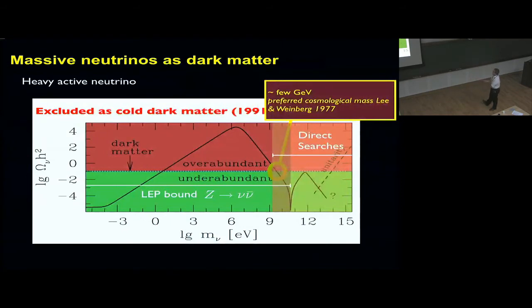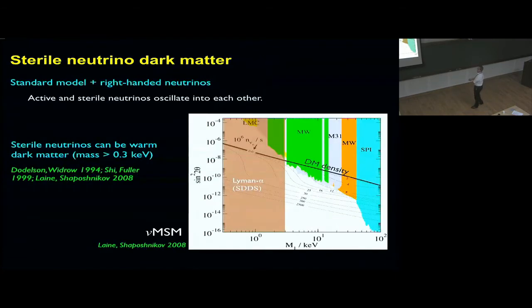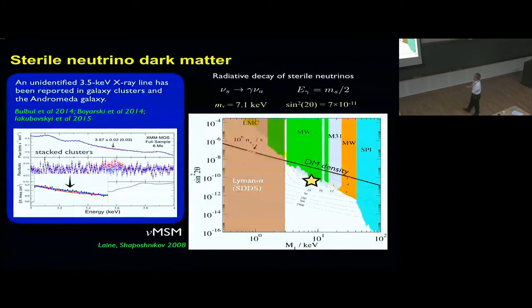Massive neutrinos were the first WIMP candidate back in 1977. There were some Russian papers before this too, but they were excluded in the early 90s by a combination of light data and direct searches. The sterile neutrinos as dark matter has been talked about recently because of the possibility that it has been detected in clusters of galaxies. Sterile neutrinos would be warm dark matter with a mass larger than 300 electron volts. Here is the neutrino minimum standard model by Shaposhnikov and collaborators with two parameters: the mixing angle on one axis and the mass of the particle on the other.